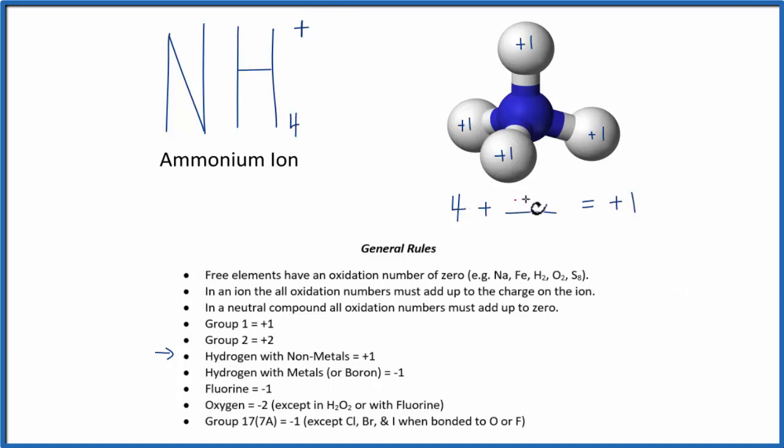Four plus a minus three, essentially four minus three, equals plus one. So this minus three is the oxidation number on the nitrogen.